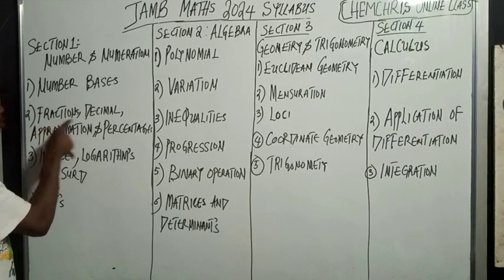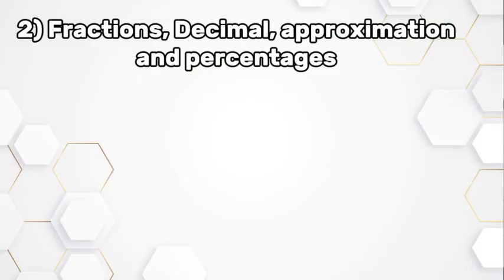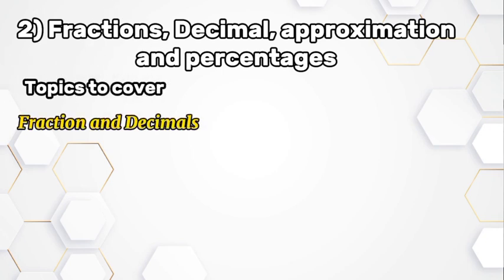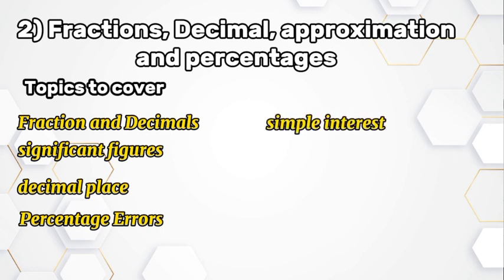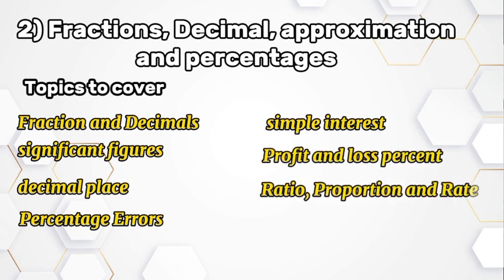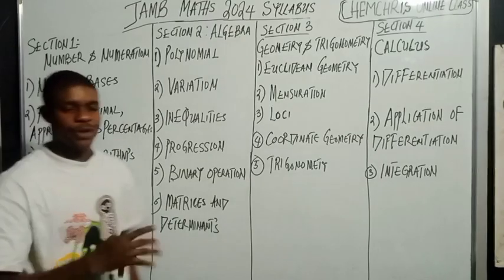Let's look at the second chapter: fractions, decimals, approximation, and percentage. The topics to cover in this section are: number one — fractions and decimals; number two — significant figures; number three — decimal places; number four — percentage error; number five — simple interest; number six — profit and loss; and the last one — ratio, proportion, and rates.